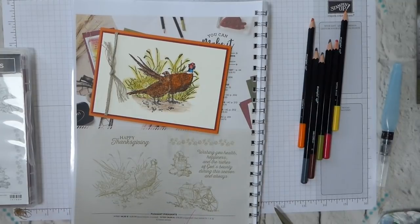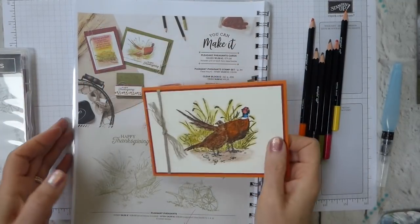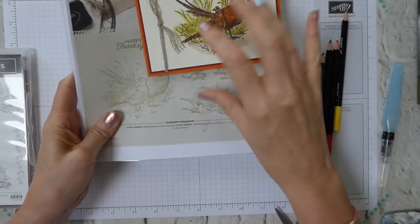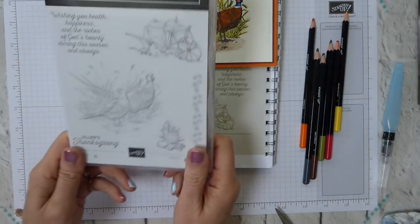Today I have got a very much more autumnal project for you, and it is using the lovely Pleasant Pheasant stamp set, which is on page 44 of your new autumn winter catalogue.